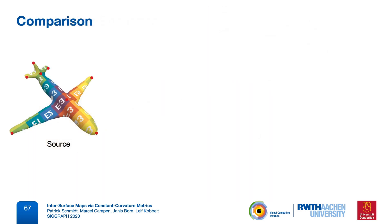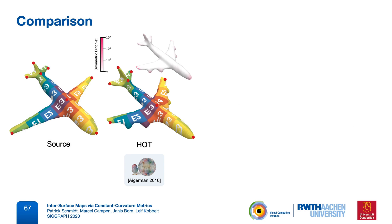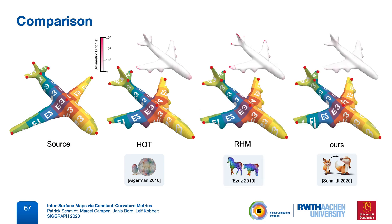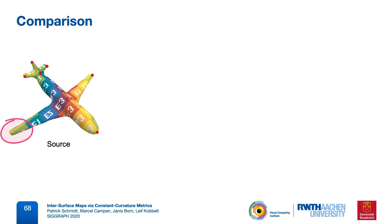In our experiments, we compared the results of hyperbolic orbifold Tutte embeddings, reversible harmonic maps, and our method. In this example, which is constrained by many landmarks, all three methods perform quite well. We now repeat the experiment, but remove one landmark at the wingtip.